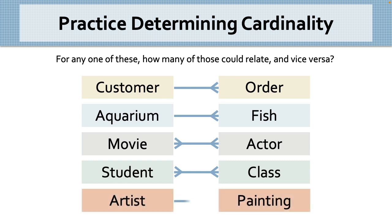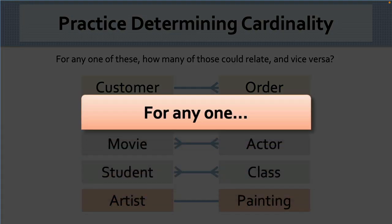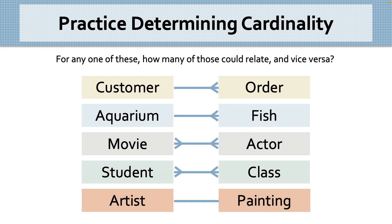Last one. Artists and paintings. By now, I hope you are saying these three important words with me. For any one. Because that's the context from which we determine cardinality. If you start with those three words, you'll always get it right. For any one artist, how many paintings could they have painted? Many. And for any one painting, how many artists painted it? Well, usually one, but what about collaborative efforts, like a community mural? If the answer to this question could ever be many, even in rare circumstances, then you must assess it as a many.